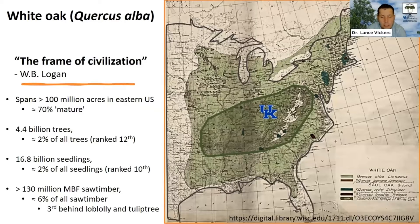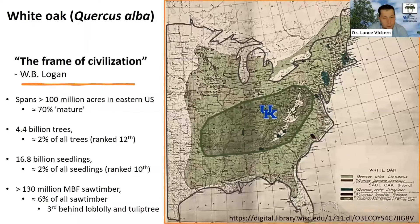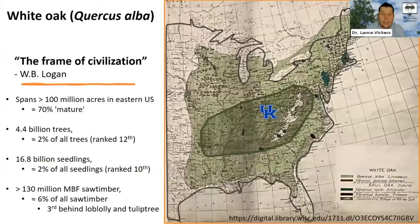White Oak spans 100 million acres, and around 70% of those acres are mature, which raises some special challenges we'll be talking about. There are around 4.4 billion White Oak trees in the East, ranking them around 12th, or 2% of all trees in the East. There's around 17 billion White Oak seedlings in the East, which sounds like a lot, but we'll learn that maybe that's not enough.